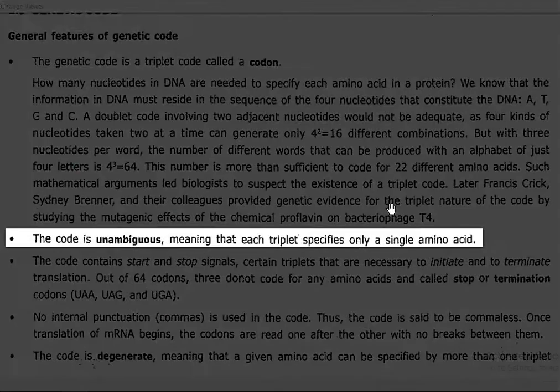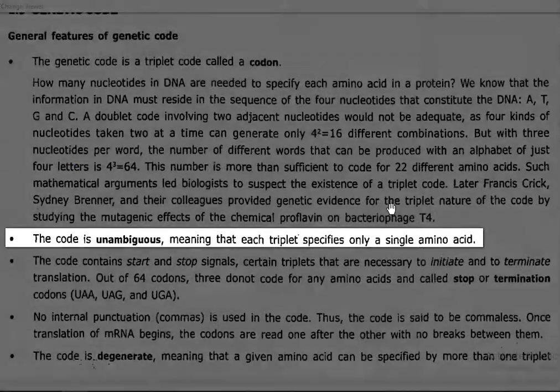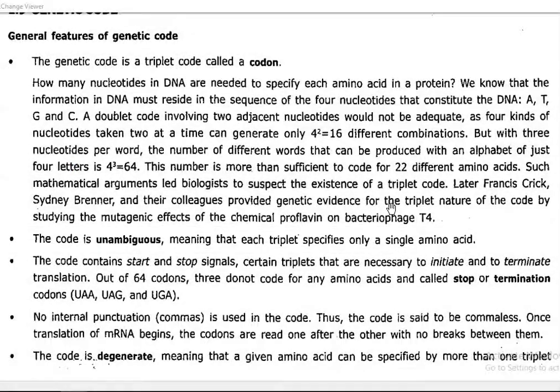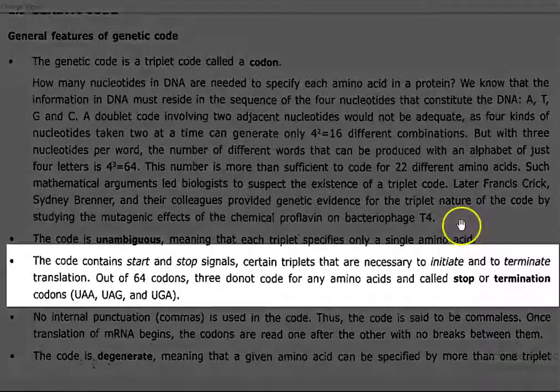The second point is that the code is unambiguous in nature, meaning that each triplet will specify only a single amino acid. No triplet can specify 2 different kinds of amino acids.